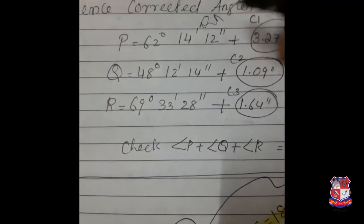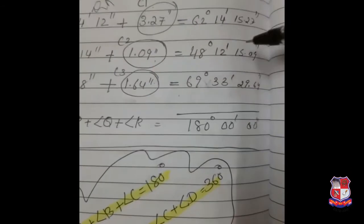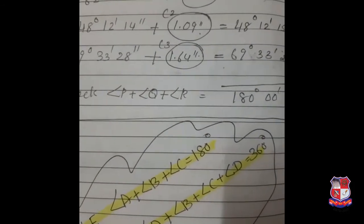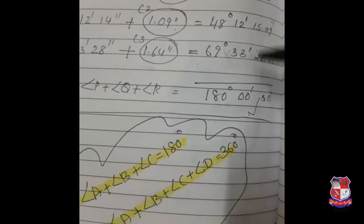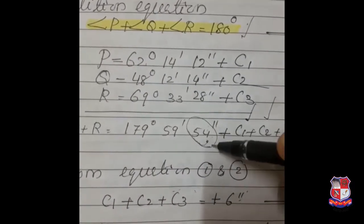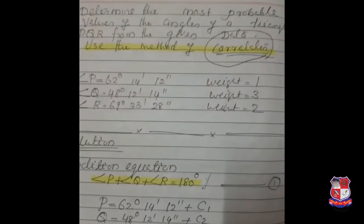The corrected angles are the given values plus C1, plus C2, plus C3 respectively. After applying corrections, all angles come out adjusted. As a check, P + Q + R = 180 degrees. In the previous case it was 179 degrees 59 minutes 54 seconds — only 6 seconds less — so we adjusted it using the correlation method. Always note: triangular traverse means add 3 angles and check for 180 degrees; quadrilateral means add 4 sides and check for 360 degrees.